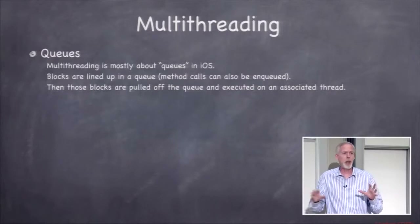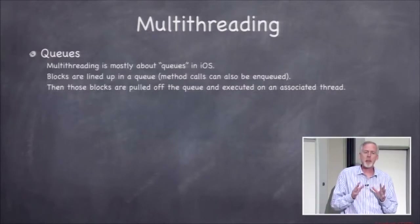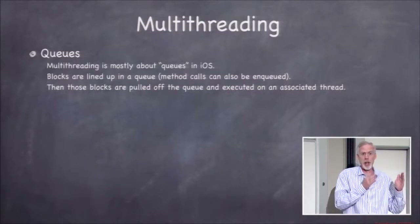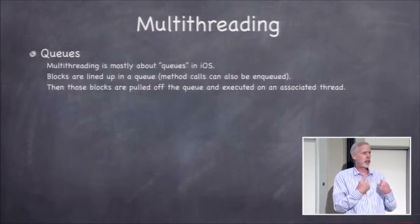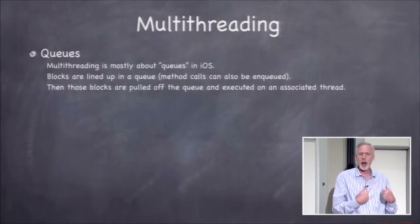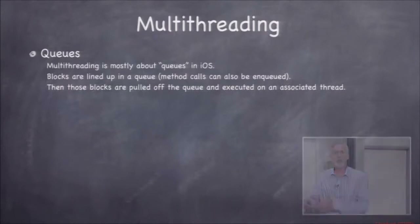Why do we want multiple threads of execution? We've got one thread — the main thread — where the user is interacting and doing touch events. We want that to be very responsive and always listening. We never want it to stop. Other threads might block — for example, if they do a network call and are waiting for something to come back. Those can wait. We would never want that main thread listening for touch events to be blocked. But for these other threads, it's okay if they block.